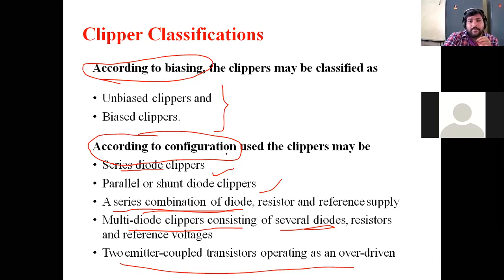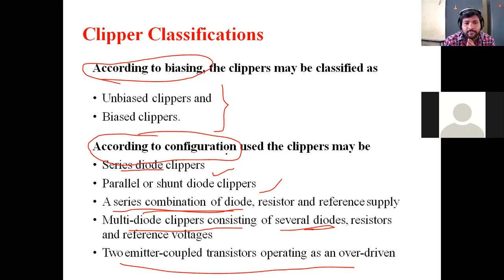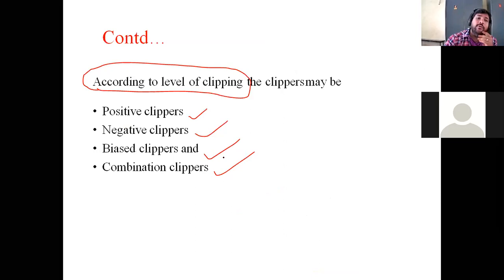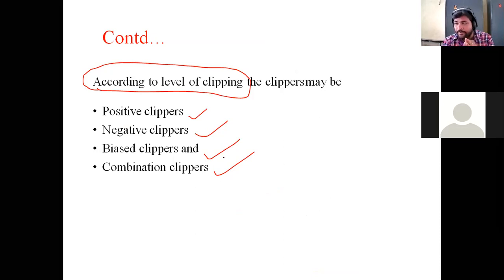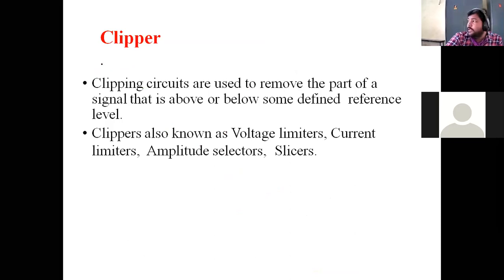So here we have only the classification of clippers. According to biasing: unbiased and biased. According to configuration: series and parallel, and also transistor clippers with series combination of diodes or multi-diode types. According to level: series diode clippers, shunted diode clippers, transistor clippers. Then positive level, negative level, and combination clippers. This is the classification of clippers.